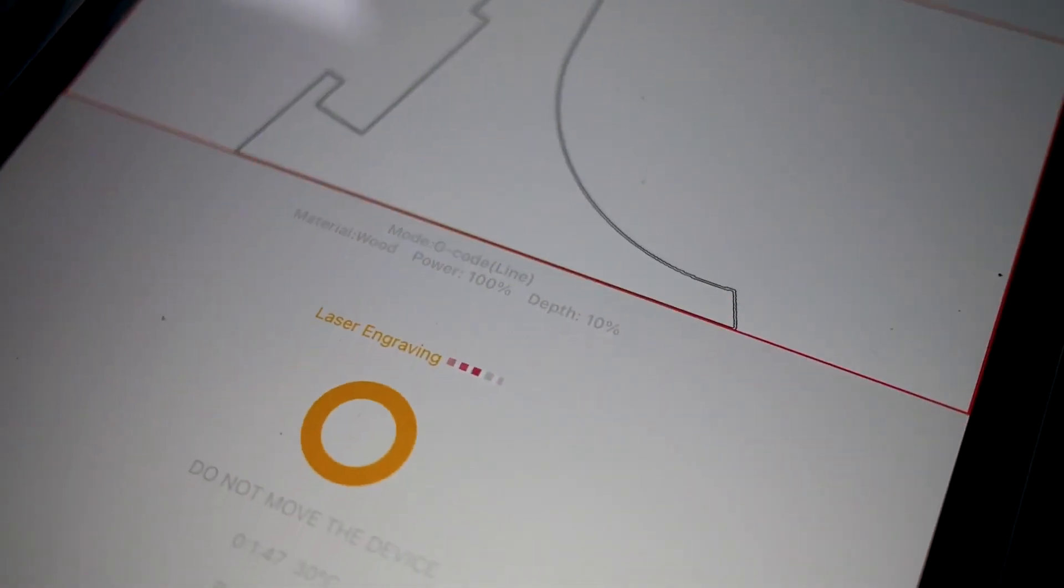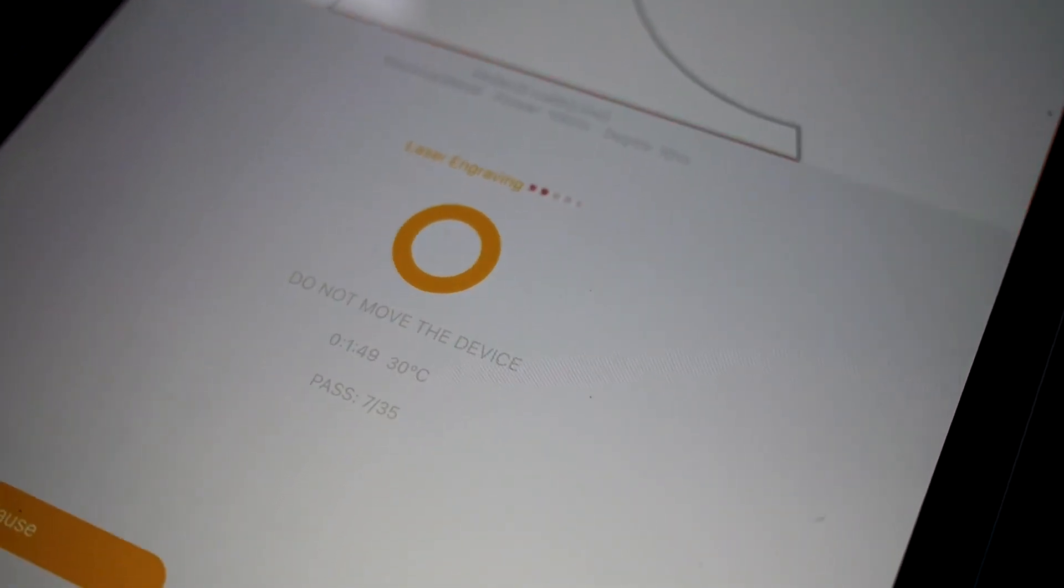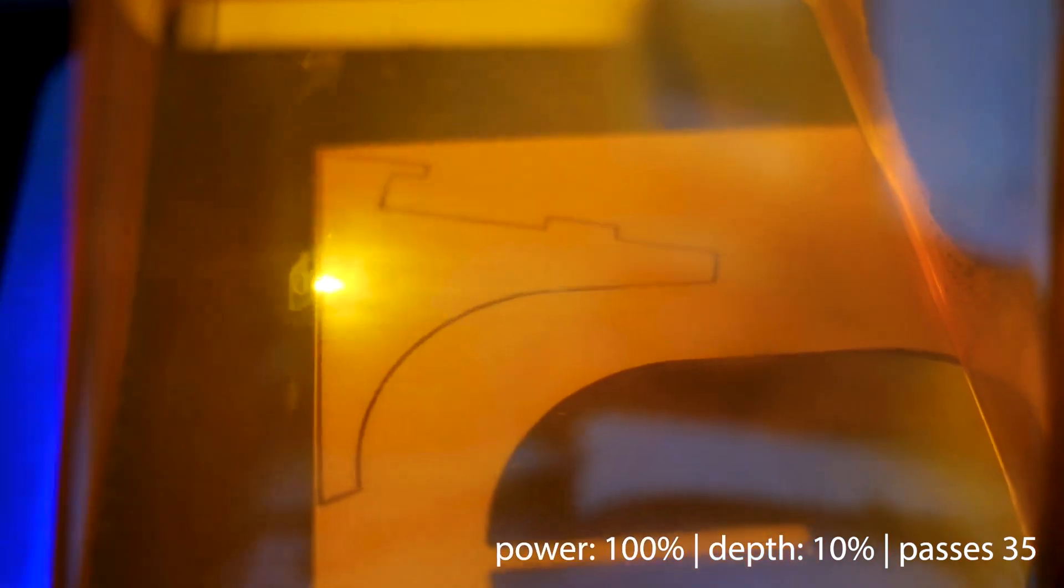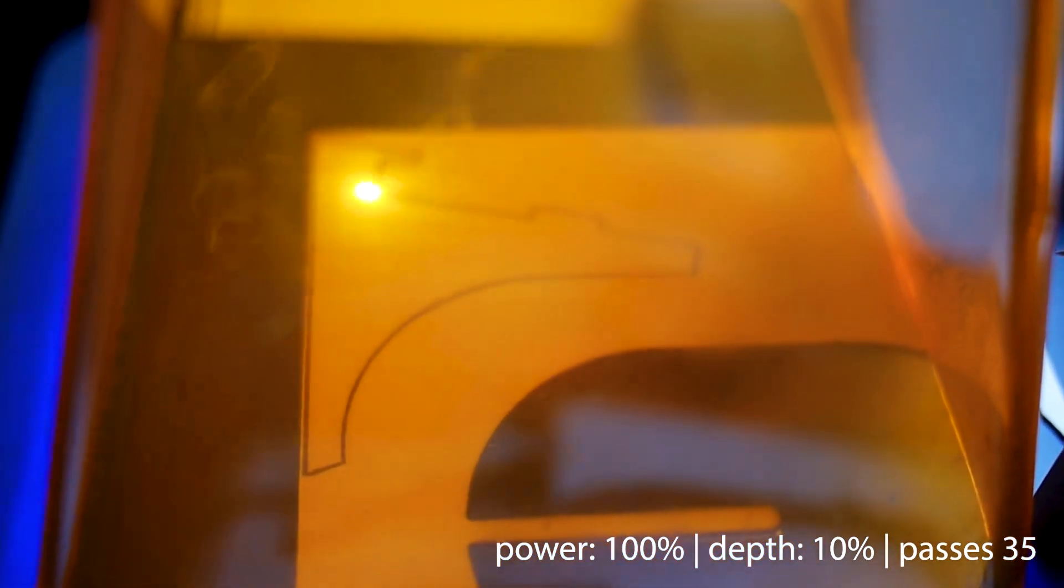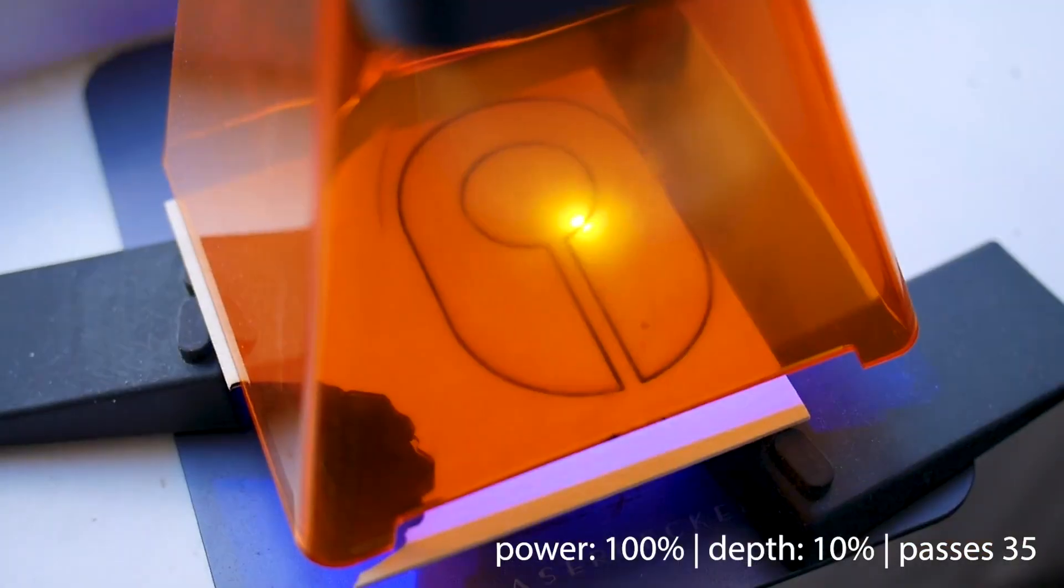For the settings, I'm using the wood material and 100% power, 10% speed, and I use 35 passes to really cut through the layers.